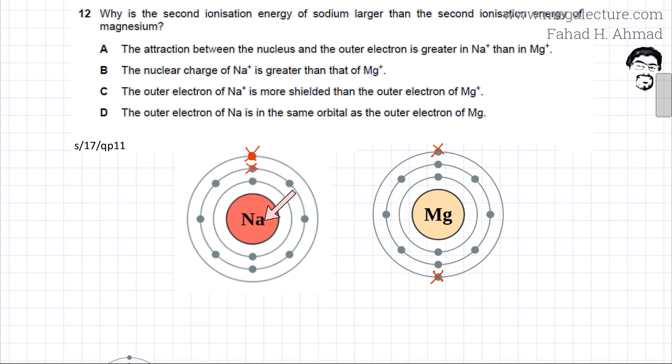So the attraction for this second electron would be very large. The reason why sodium has a very high second ionization energy compared to magnesium is because you're removing an electron from an inner shell.